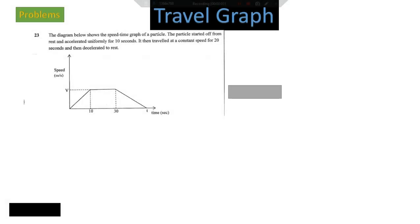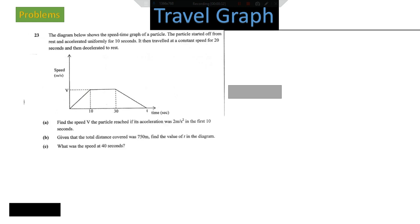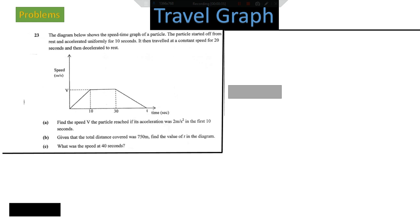Today we've got a question under travel graphs. The question reads: the diagram below shows the speed-time graph of a particle. The particle started from rest and accelerated uniformly for 10 seconds, then traveled at a constant speed for 20 seconds, and then decelerated to rest. This question comes under mechanics — very easy, just follow through as we solve it.